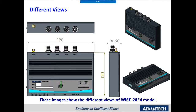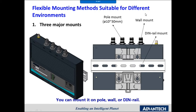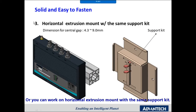These images show different views of the YS2834 model, which has flexible mounting methods suitable for different environments. You can mount it on a pole, wall, or DIN rail. This figure demonstrates a vertical extrusion mount, and you can also use horizontal extrusion mounts with the same support kit.